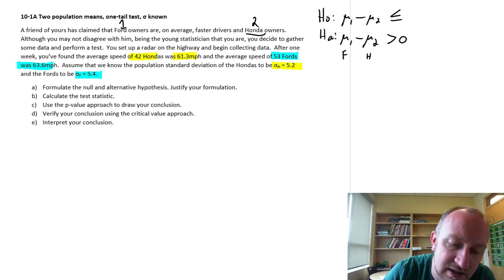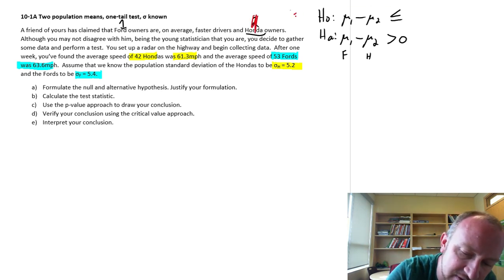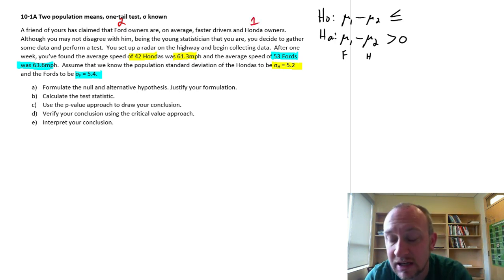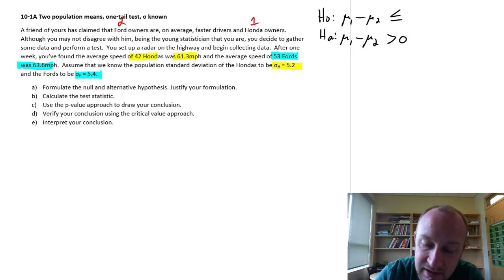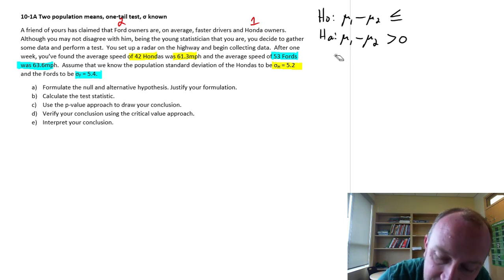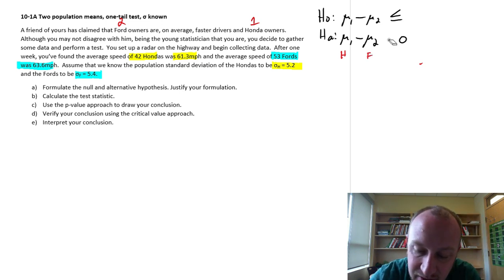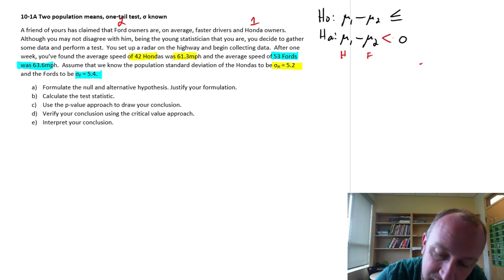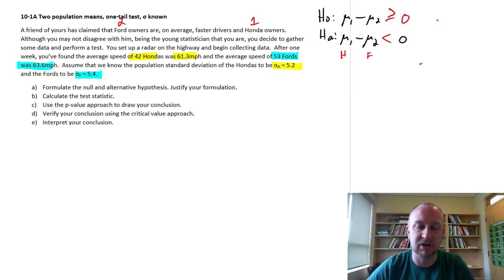Notice that if I had arbitrarily, if I had decided that the Ford is going to be population two and the Hondas are population one, well now this is no longer an upper tail test. If these are my Honda drivers and here are my Ford drivers, well now this has become a lower tail test. So this can be a lower tail test or an upper tail test.